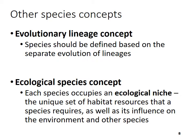Other species concepts include the evolutionary lineage concept, which says species should be defined based on separate evolutionary lineages. The ecological species concept says each species occupies a distinct niche — meaning they have a habitat they use in a certain way and influence the environment — essentially defining species based on how they use their habitat.